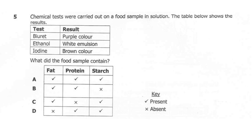The correct answer here is B. The food sample contains fats because the ethanol test gave a white emulsion, which is a positive result. Protein is also present because the biuret test turned purple. Starch is absent because the iodine remained brown — the positive result for iodine is blue or black.